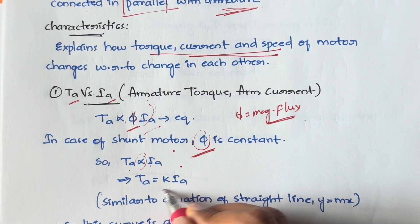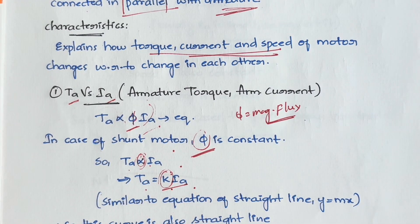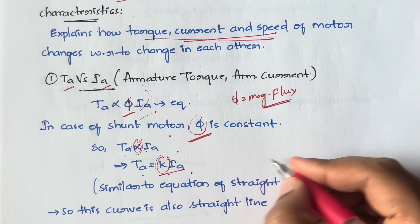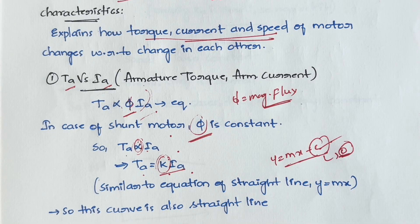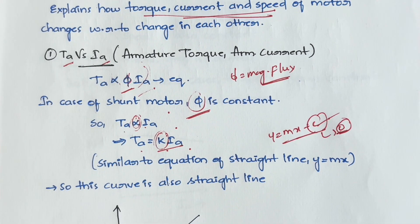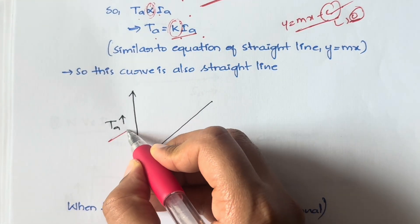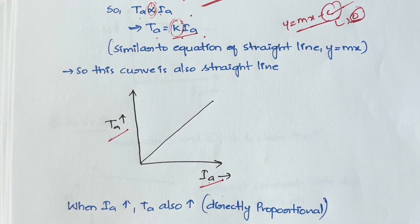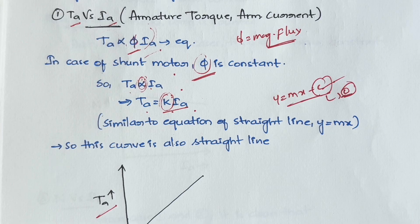When you remove the proportionality, you get a constant: Ta = k × Ia. This looks like the equation of a straight line — y = mx — so the graph of Ta versus Ia is a straight line. This means if torque increases, armature current also increases. They are directly proportional to each other because flux is constant in the case of a shunt motor. This is the torque versus current relationship.